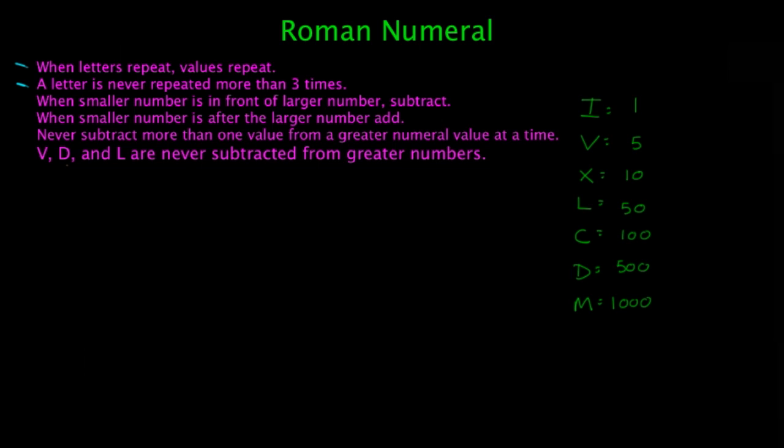Now when a smaller number is in front of a larger number, you subtract. So for example, if I is in front of X, that's going to be 1 minus 10, and that's going to equal 9. And don't worry about the negative values, it's just going to be an absolute value. So values don't matter, or negative values don't matter, just make everything positive.